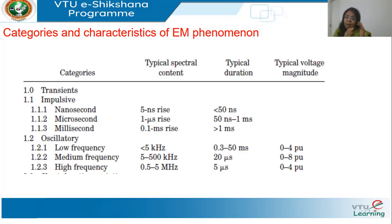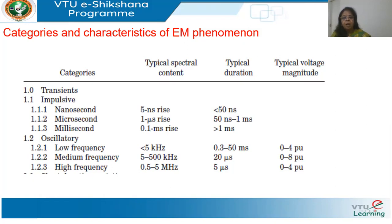Those were the broad classes. Now we will see the different categories and their typical durations. The first category is transients. We have impulsive transients — an impulse is in only one direction, either positive or negative, typically caused by lightning. The duration could be in nanoseconds, microseconds, or milliseconds — that is, 10⁻⁹, 10⁻⁶, and 10⁻³ seconds.